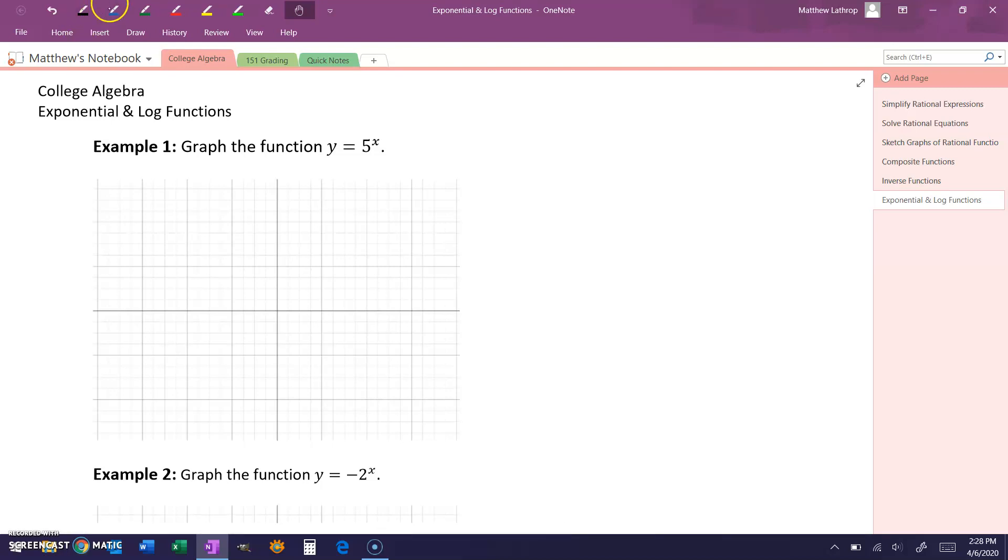In example one, we have the function y equals 5 to the x power. This is an exponential function where a is equal to 5, and that value is clearly greater than 1. So we know that our exponential function will be increasing over the entire domain.